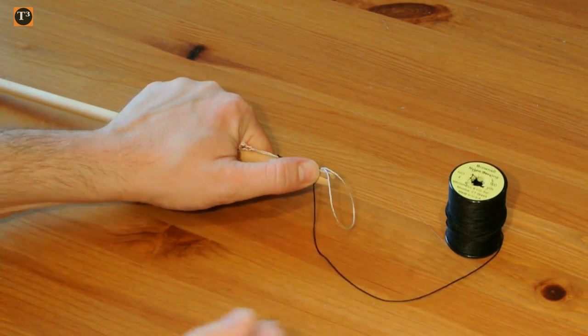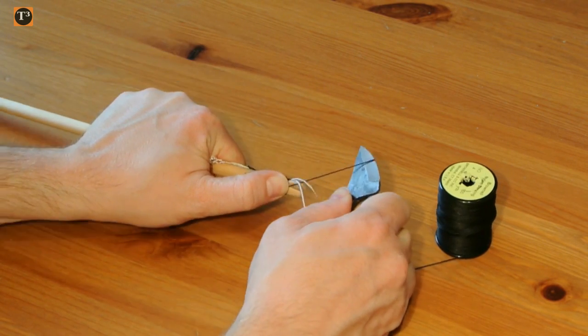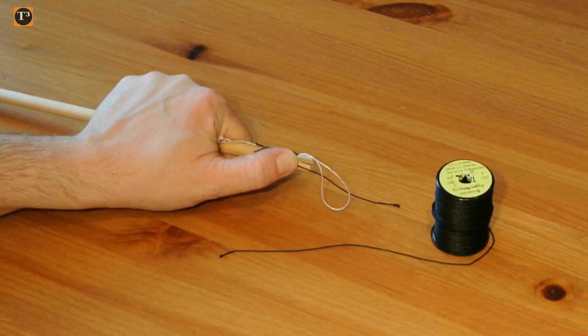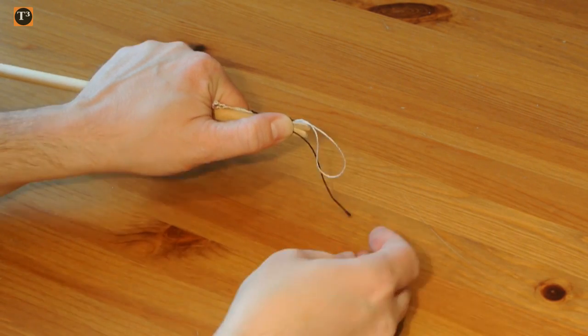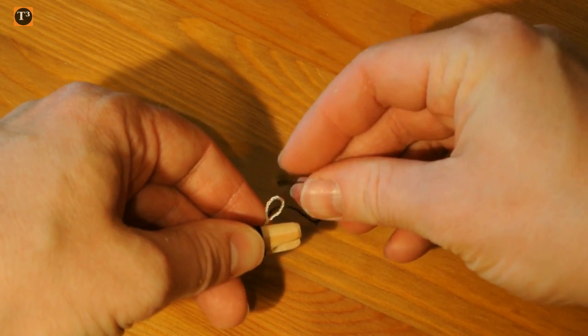As soon as you reach the nock, cut the yarn but leave some loose end to work with. Fiddle this end through the loop and pull it through the winding.